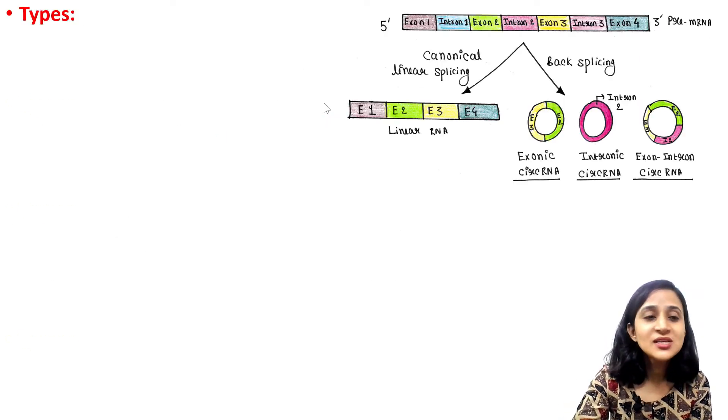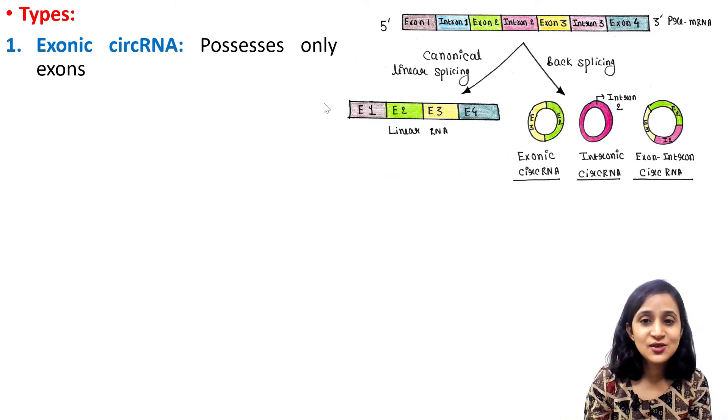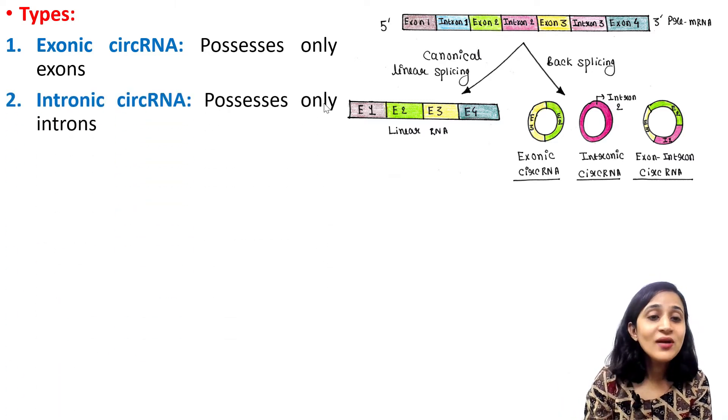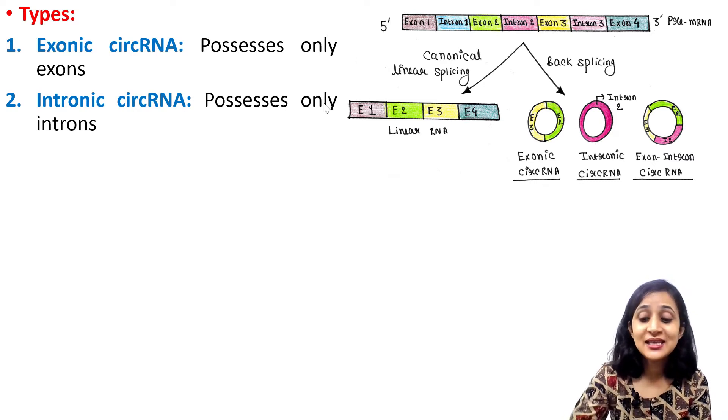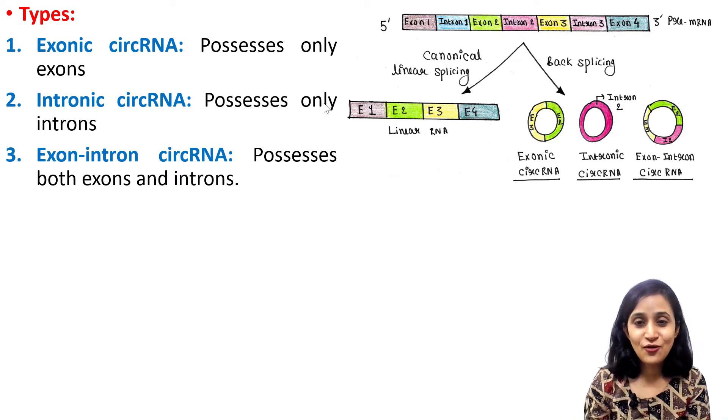Now we will talk about the types. First one is the exonic circular RNA that possesses only exons. Then is the intronic circular RNA, which possesses only introns. And exon-intron circular RNA, which possesses both exons and introns.